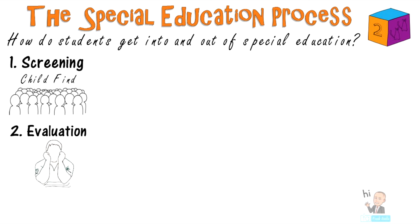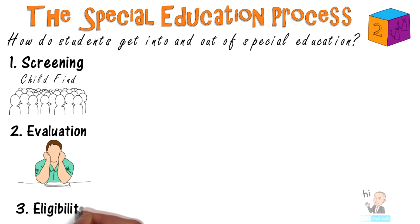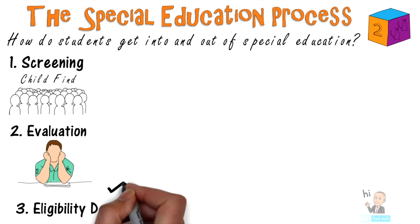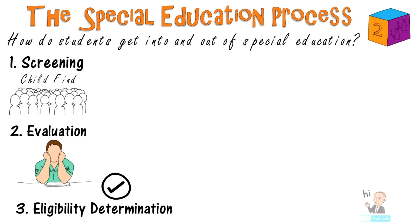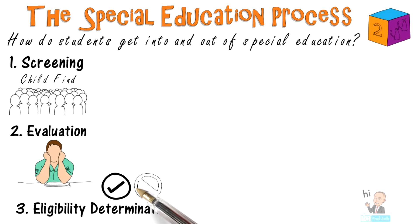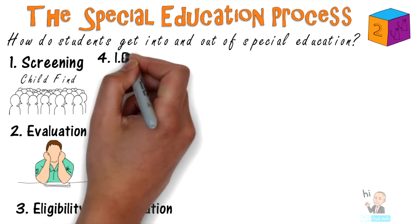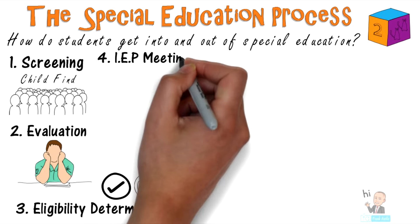The parents have a right to an independent evaluation and the school must pay for it. Third is eligibility determination. At this stage, school personnel, professionals, and parents analyze the results to determine whether or not a child can receive services. Again, the parents have the right to contest the decision.